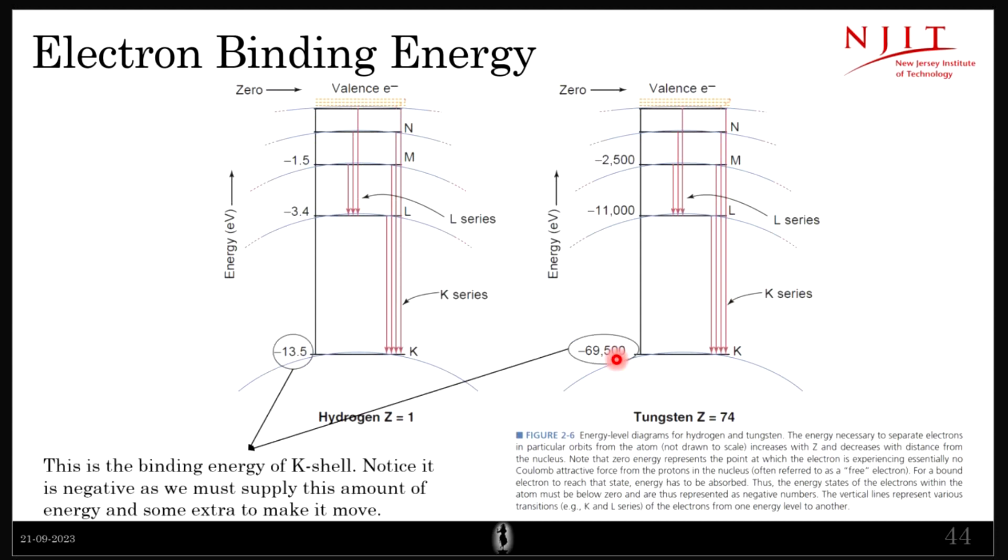Okay, now if you see, the binding energy changes with the—I mean, as the elements change, which is quite intuitive, right? I mean, tungsten has more number of protons, so it has 74 protons, so there is more force that is pulling the electron towards the nucleus. So you will have to supply greater energy to break that force. On the other hand, hydrogen just has one proton in the nucleus, hence with a small amount of energy relative to tungsten you can break the force. So the binding energy depends on the element.